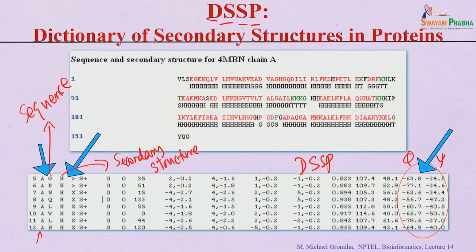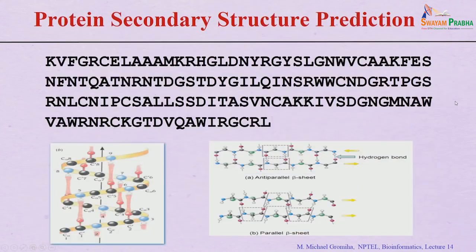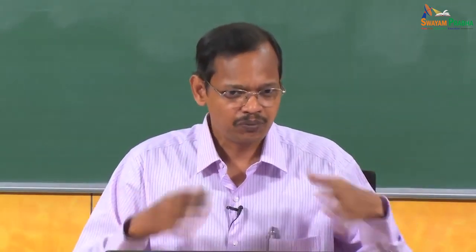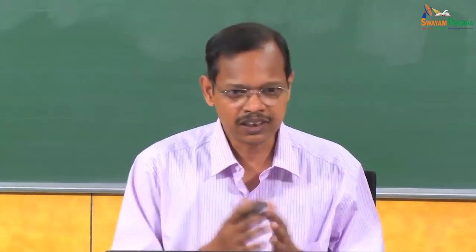DSSP can assign secondary structures only when 3D structures are known. For myoglobin, the first line shows the sequence and the second line shows the secondary structure assignment. The question is: if the structure is not known and we only have a primary sequence, is it possible to predict the secondary structure — where alpha helices or beta strands will form? Various methods can be derived by comparing known sequences and structures, and evaluated against experimental data.